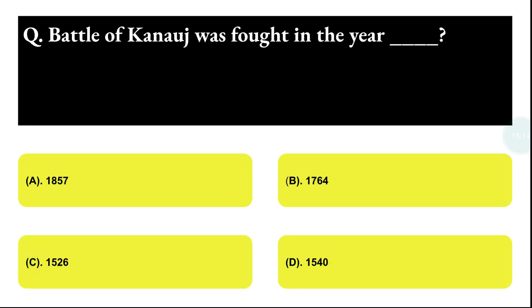Next question: the Battle of Kans was fought in the year. Option A: 1857, Option B: 1764, Option C: 1526, Option D: 1540. The correct answer is option D, that is 1540.